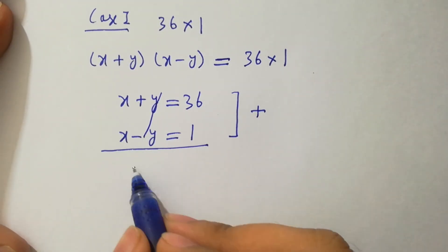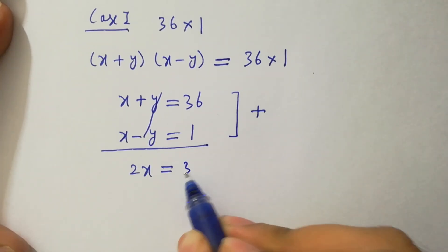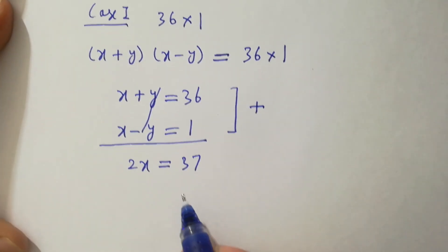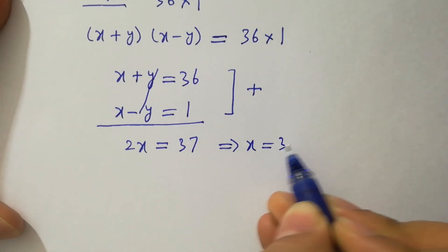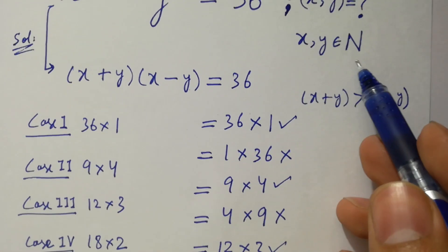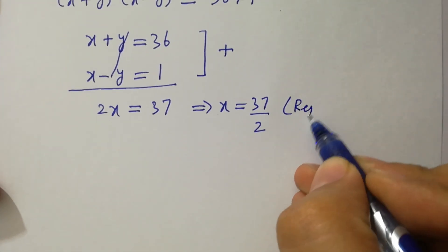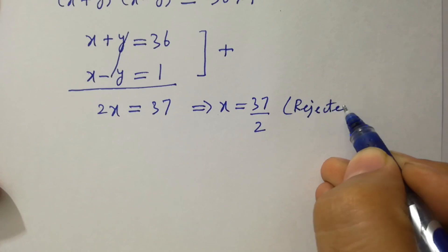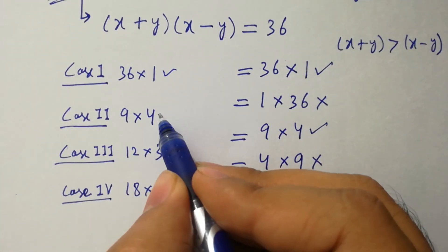For case 1, x plus y equals 36 and x minus y equals 1. Adding them: 2x equals 36 plus 1, which is 37. So x equals 37 over 2, which is a fraction, not a natural number. So case 1 is rejected.